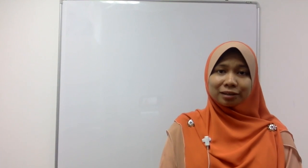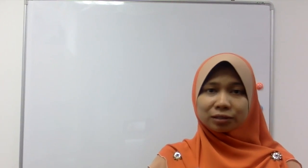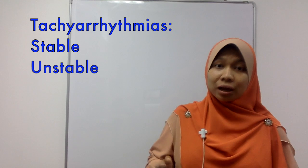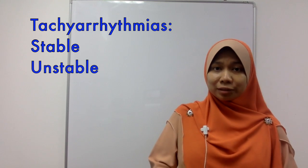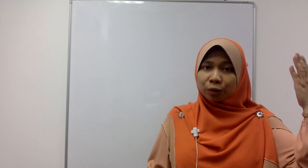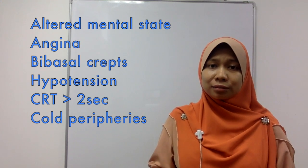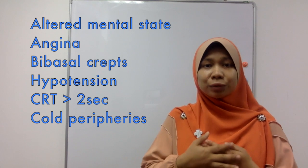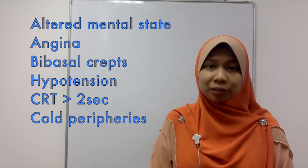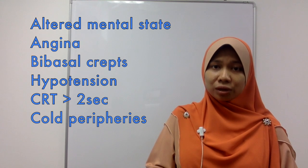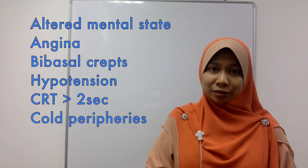Now we go to tachyarrhythmia. In adults, a normal heart rate is 60 to 100 bpm, so anything above 100 is considered tachycardic. The most important thing in tachyarrhythmia is to determine whether it is stable or unstable. For unstable tachyarrhythmia, we look for signs of shock or inadequate tissue perfusion: altered mental state due to reduced perfusion to the brain, chest pain or angina due to reduced blood flow to the heart, and bibasilar crackles.